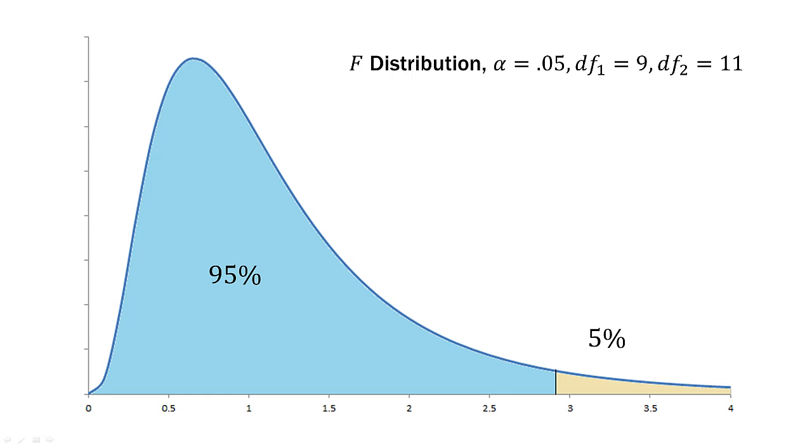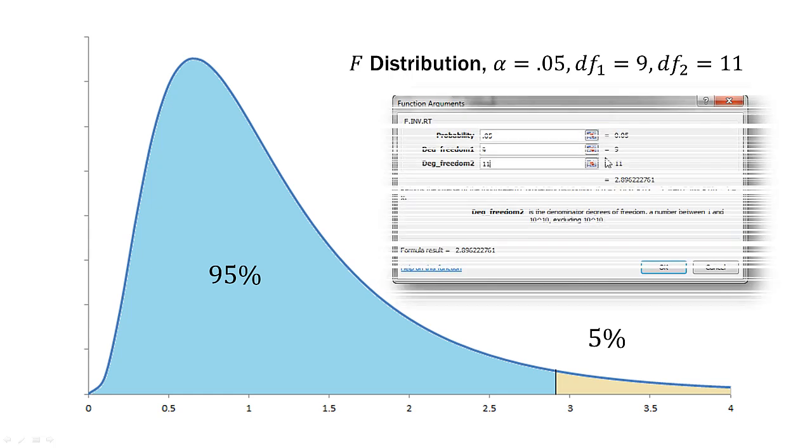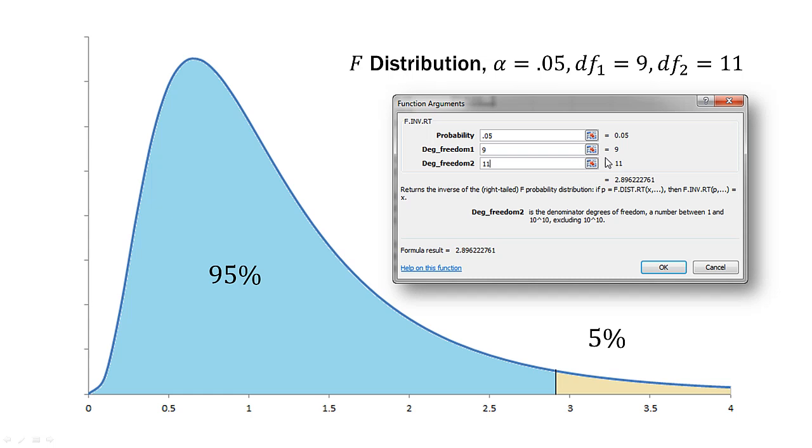Now we have the 95% in the lower tail, and the 5% in the upper tail. Because remember, these are always upper tailed tests. Now we need to find the critical value that separates the rejection region from the non-rejection region here in the blue.